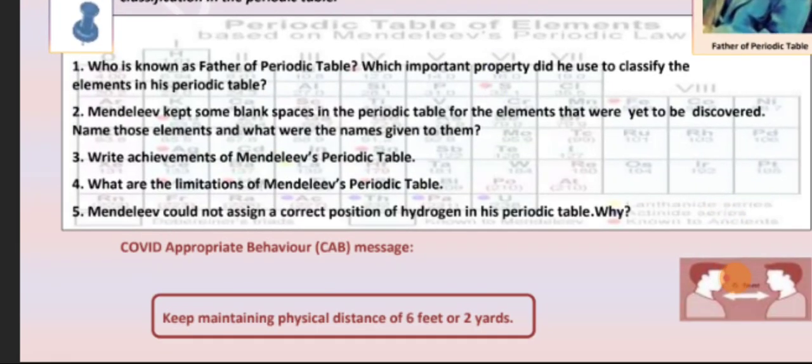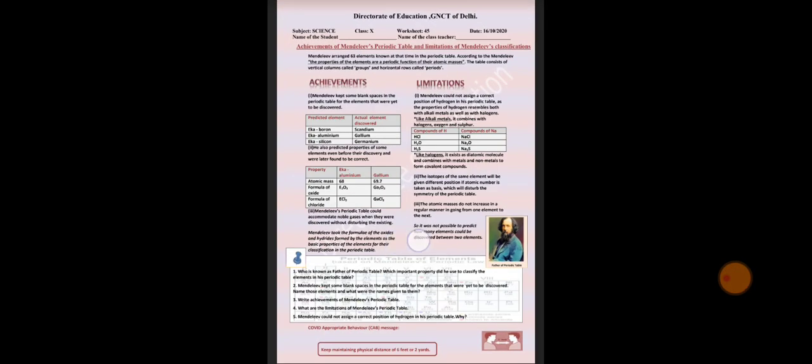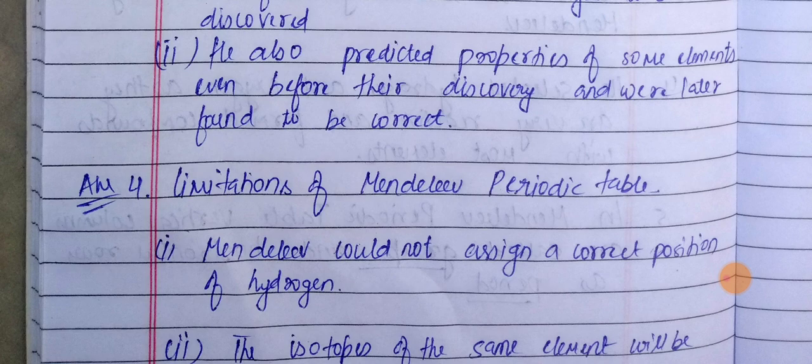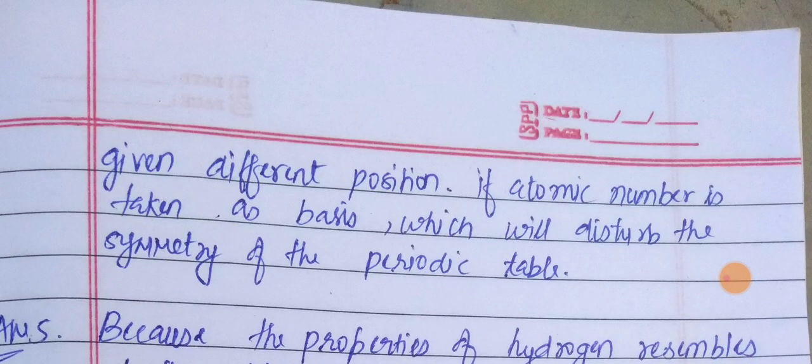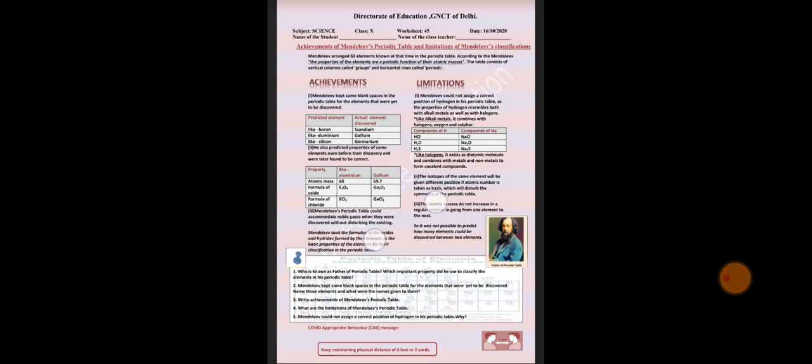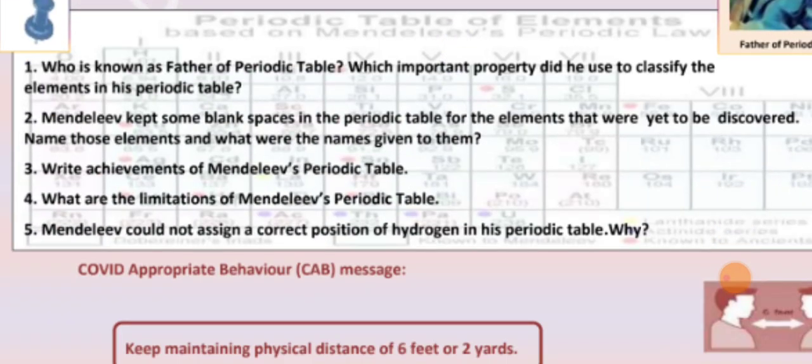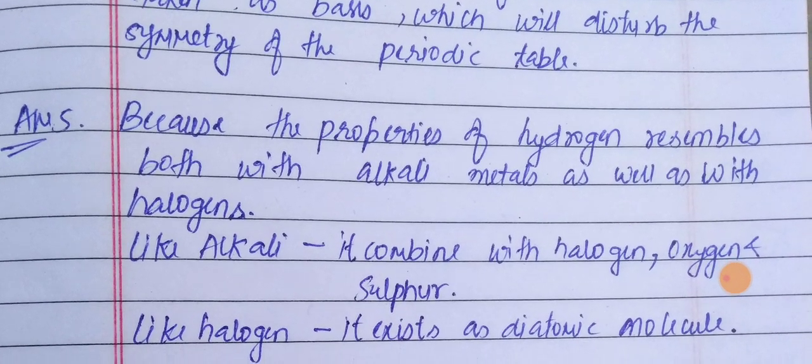Question: What are the limitations of Mendeleev's Periodic Table? Answer: Limitations - Mendeleev could not assign a correct position of hydrogen. Why? Because the properties of hydrogen resemble both alkali metals as well as halogens. Like alkali metals, it combines with halogen, oxygen, and sulfur. Like halogens, it exists as diatomic molecules.